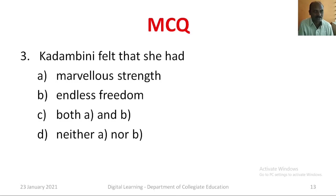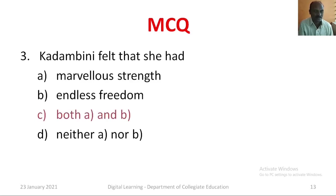Question number three: Kadambini felt that she had — Option A: Marvelous strength. Option B: Endless freedom. Option C: Both Option A and Option B. Option D: Neither Option A nor Option B. The correct answer is Option C, both A and B.